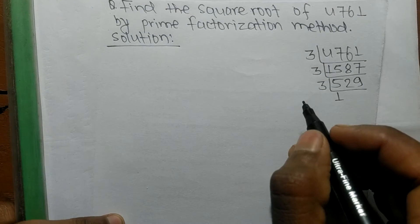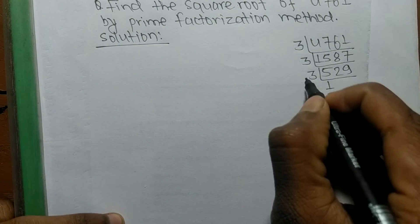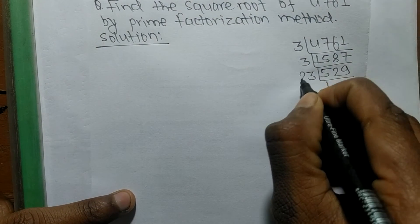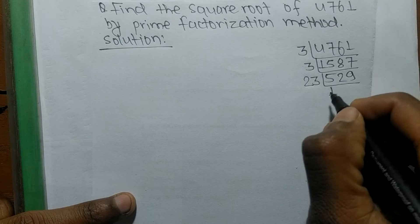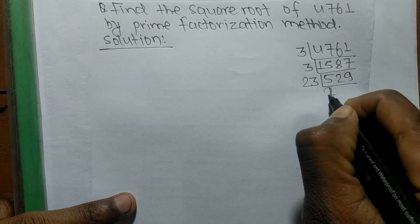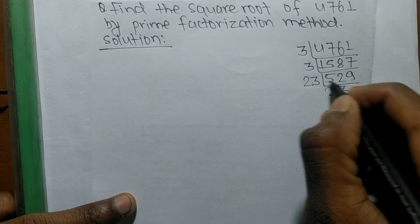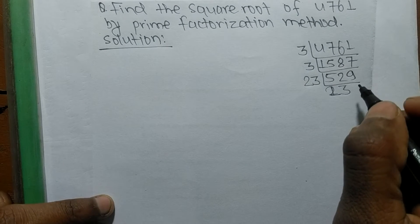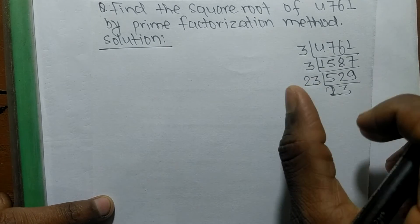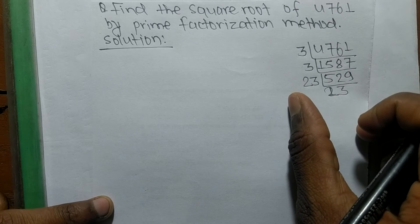Now the remaining factor is divisible by 23. 23 times 23 equals 529. So after finding out the prime factors of this number, we now find the square root.